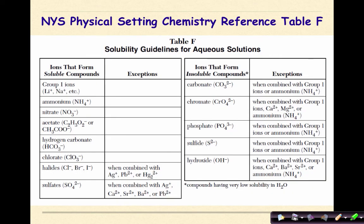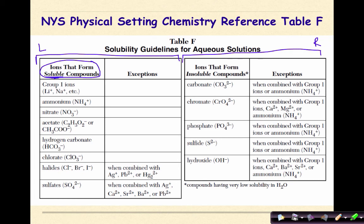Here is our New York State Physical Setting Reference Table F, and there is a lot going on in this table. We're going to divide it into two parts: the box on the left and the box on the right. In the left box, we have ions that form soluble compounds. Soluble means that if your compound has one of these ions in it, it will dissolve in water. Right next to it is the exceptions column.